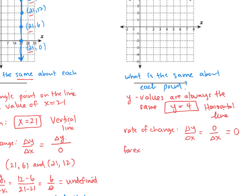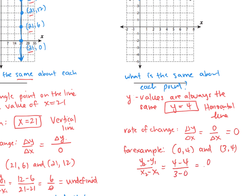Let's pick two points to verify: (0, 4) and (3, 4). We do the difference in the y's divided by the difference in the x's: that's (4 minus 4) over (3 minus 0), which is zero over three, which is zero.